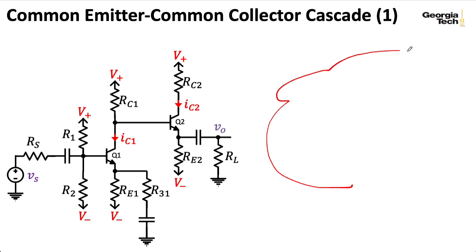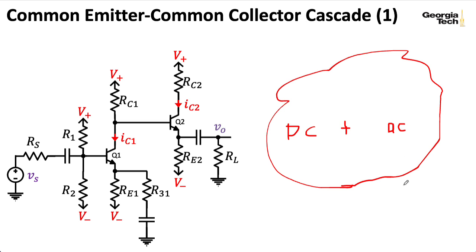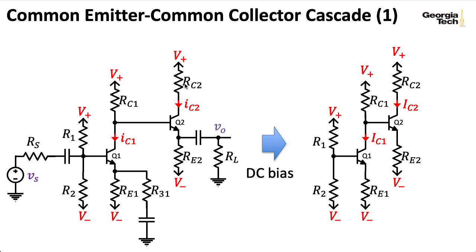In the lectures on single transistor amplifiers, I would write down what the DC circuit was and then write down what the AC small signal circuit was, but that won't fit on the slide for an amplifier this big. So I'll deal with the DC biasing first, and then we'll talk about AC. To draw the DC bias circuit, we open up all the capacitors — this goes away, this goes away, and this goes away — and we're left with this structure here. This is exactly the same DC bias structure as we had with the common emitter, common emitter cascade. So the next few slides are identical.